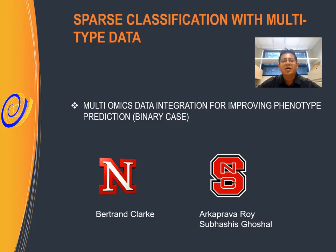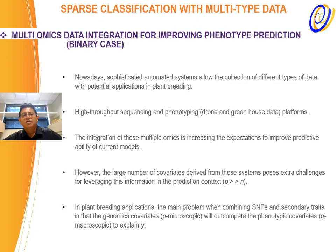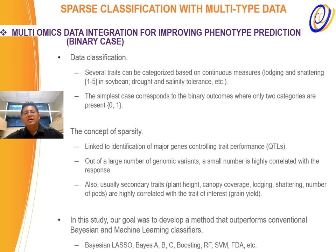Now I will briefly discuss another project: sparse classification with multi-type data. This is an effort for improving the classification of binary traits by integrating multi-omics. Nowadays, sophisticated automated systems allow the collection of different types of data with potential applications in plant breeding — we have high-throughput sequencing and high-throughput phenotyping, and we can also integrate weather data. The idea is to improve the predictability or classification rate of traits. In our case, we are considering a binary trait. The models we develop are linked to the concept of sparsity, where a few variants explain a large amount of variability in the traits.